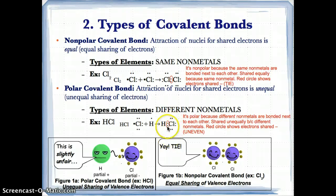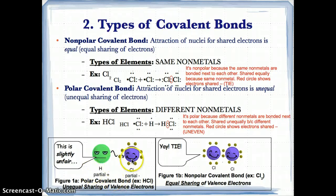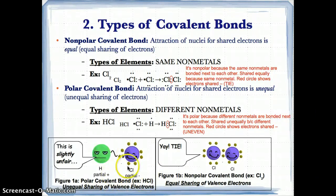The electrons shared in the middle are attracted more closely to Cl, so the sharing is unequal — that's what makes it polar. In summary: there is unequal sharing in polar covalent bonds because two different nonmetals are involved, and equal sharing in nonpolar covalent bonds because the same nonmetal is involved on both sides.